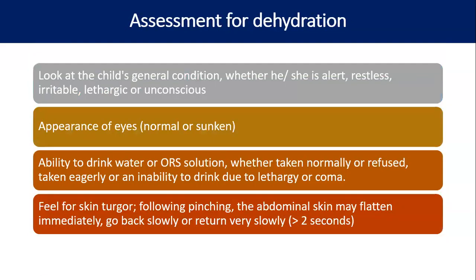For dehydration assessment, inspection is very important: whether the patient is alert and active, restless/irritable, lethargic, or unconscious. Appearance of eyes — normal or sunken, presence of tears, dry mucosa, and ability to drink water. Then feel for skin turgor: if pinching abdominal skin on the lateral flank takes more than two seconds to return to normal, it indicates severe dehydration; if it returns instantaneously, there is no or very little dehydration.